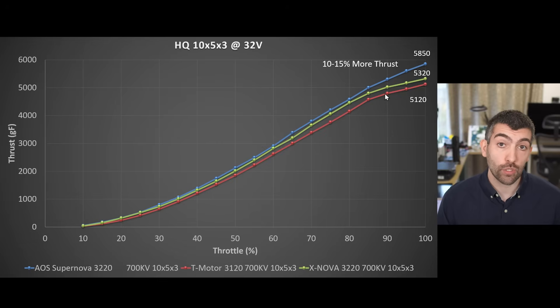Moving up to the Xnova 3220 this was the best performing 3220 that I had tested previously and it delivered a maximum thrust of 5.3 kilos. The AOS Supernova 3220 delivers about 10 to 15% more thrust than these two motors and it tops out at 5.85 kilos on the same HQ 10 by 5 by 3 running on 8S battery voltage. If you were to move up to a slightly steeper pitch prop like a 10 by 5.5 by 3 then you would easily break 6 kilos with this motor.